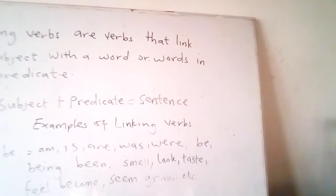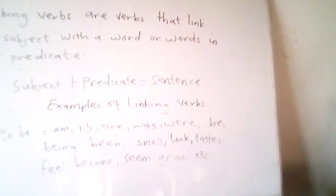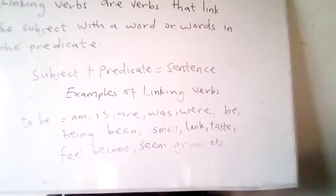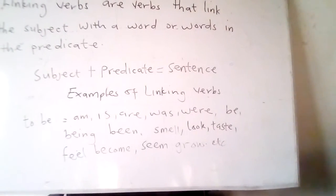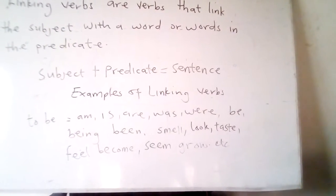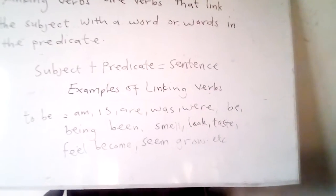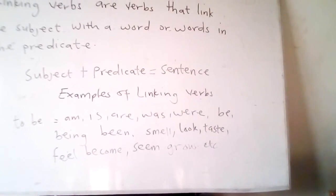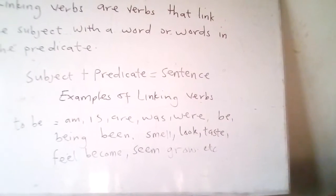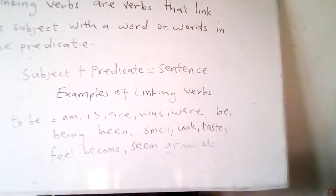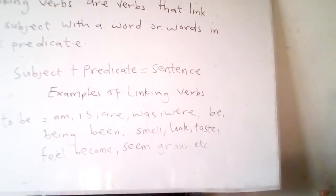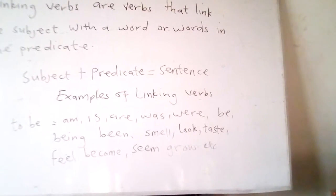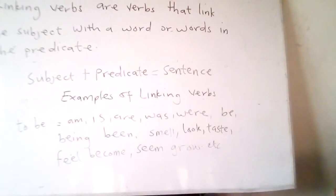Common linking verbs are the various forms of the verb 'to be' and other verbs that function like 'to be'. The forms of 'to be' are: am, is, are, was, were, be, been. Other linking verbs include: smell, look, taste, feel, become, seem, grow, stay, sound, appear, remain, and so on.